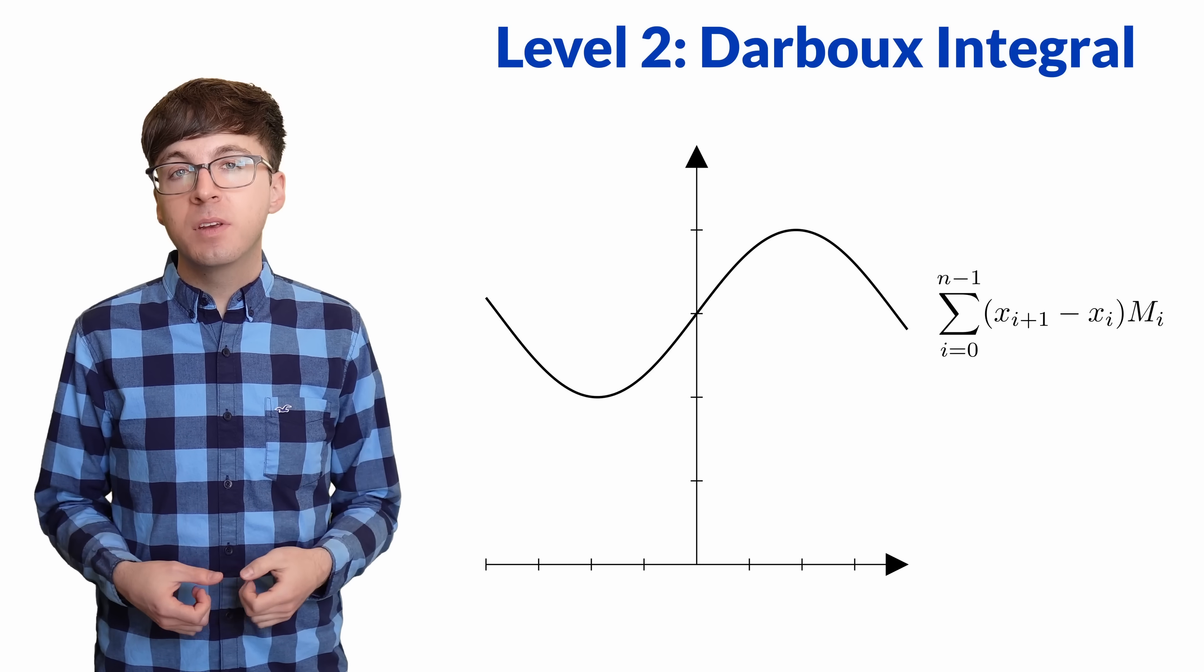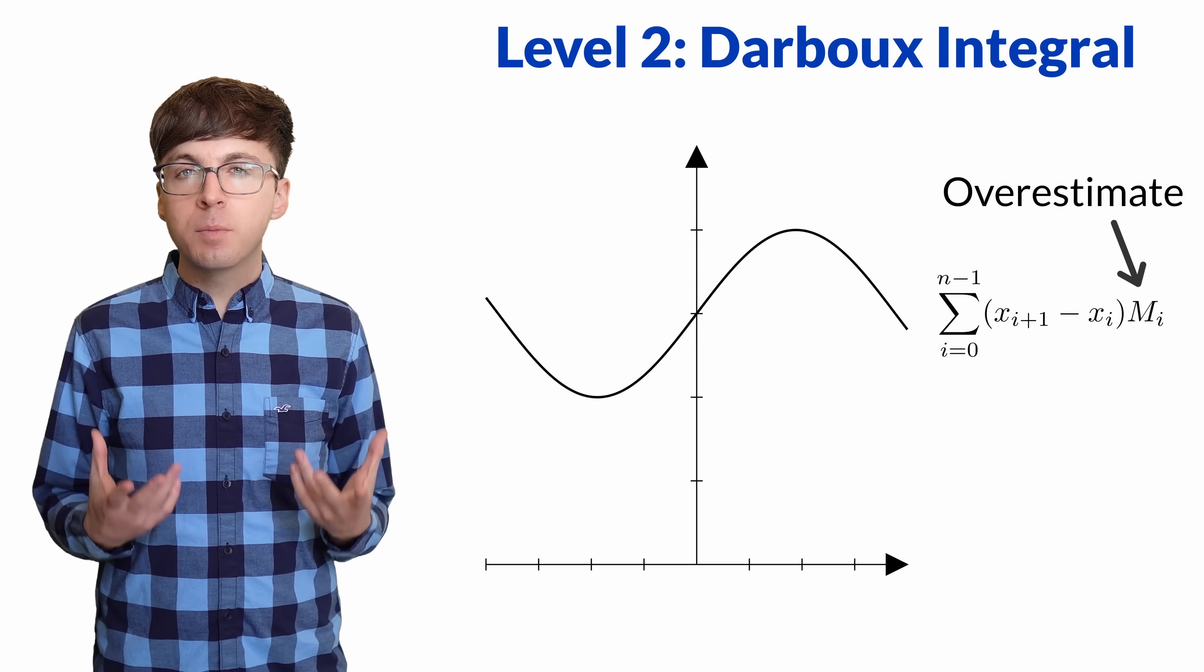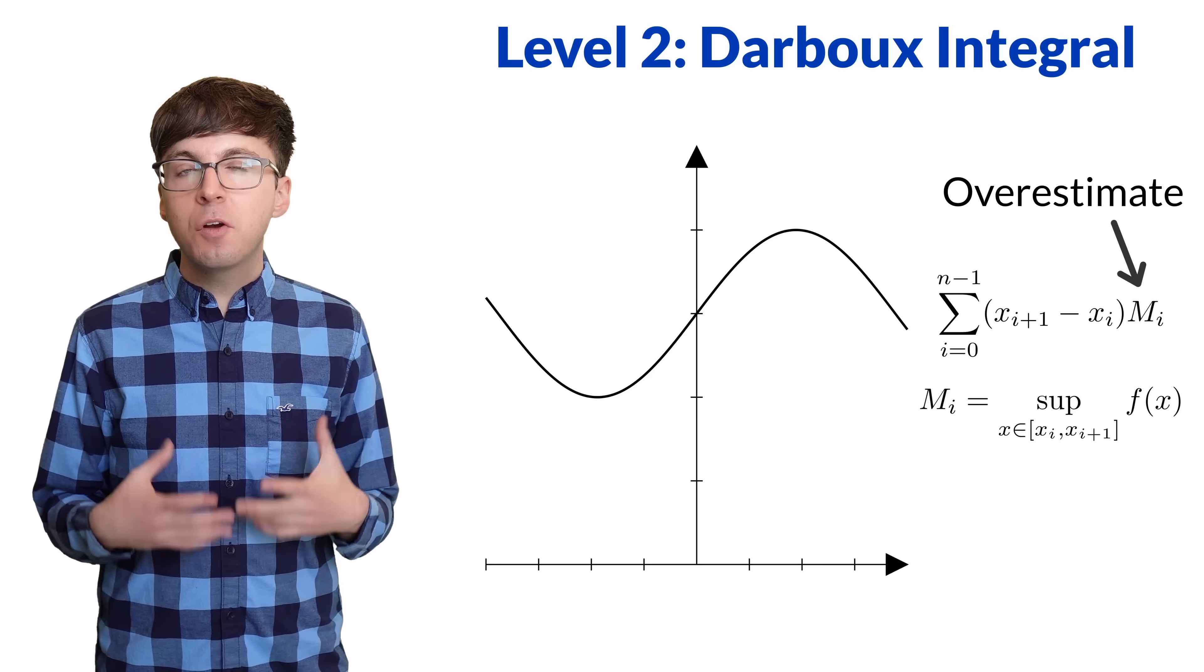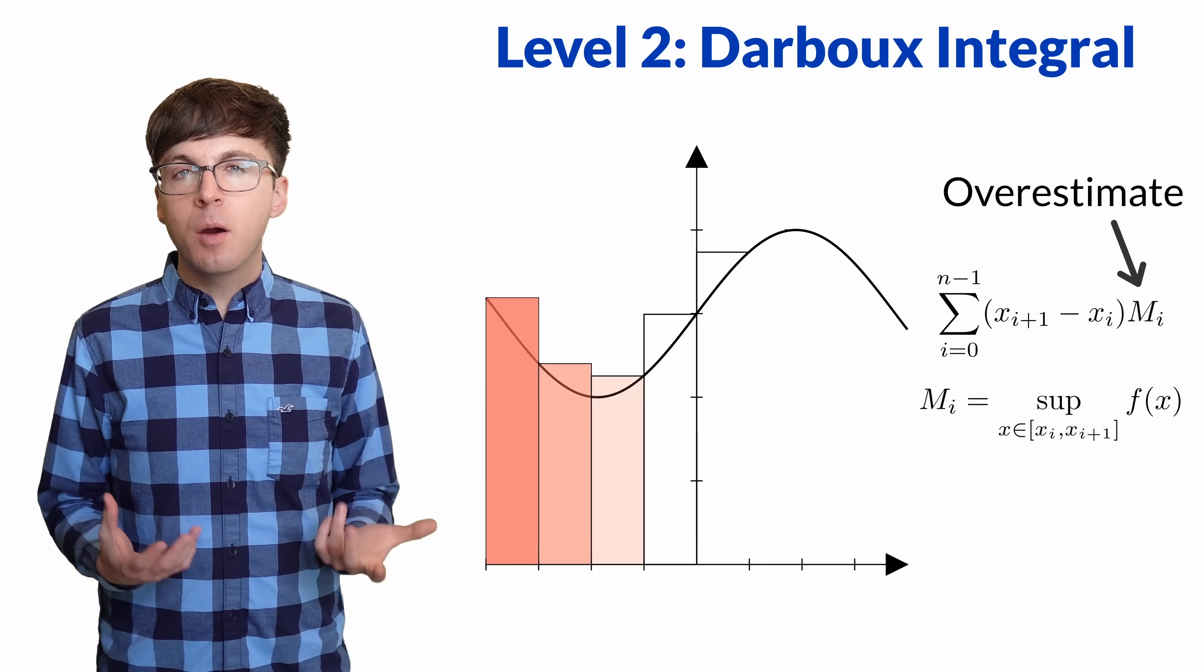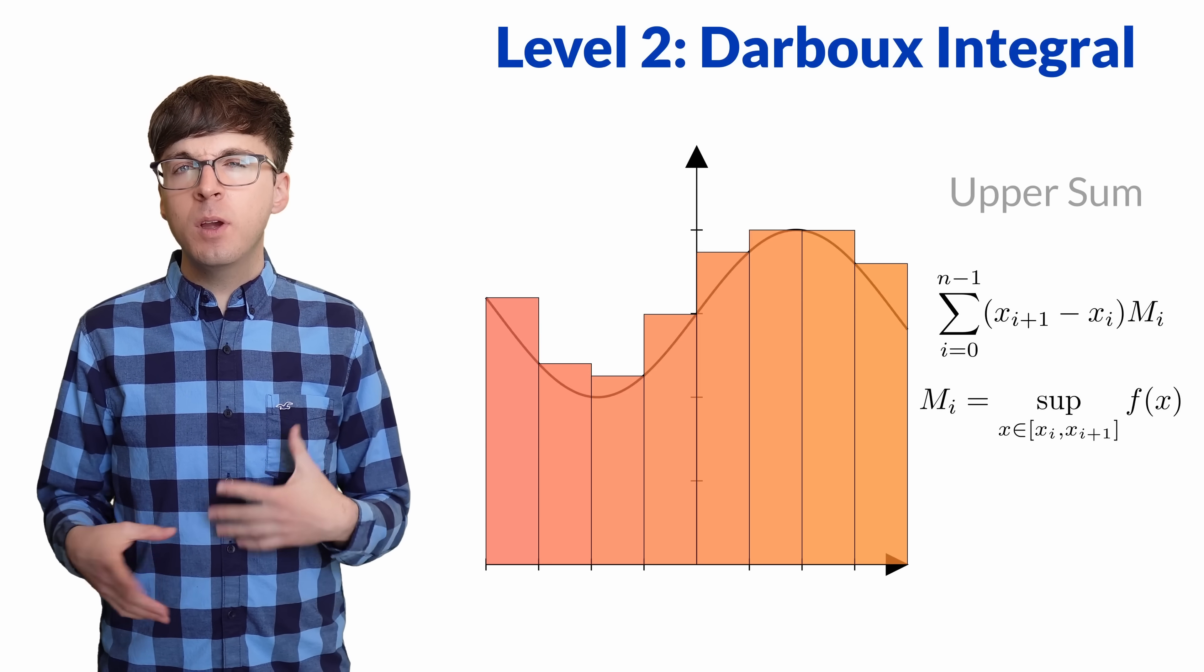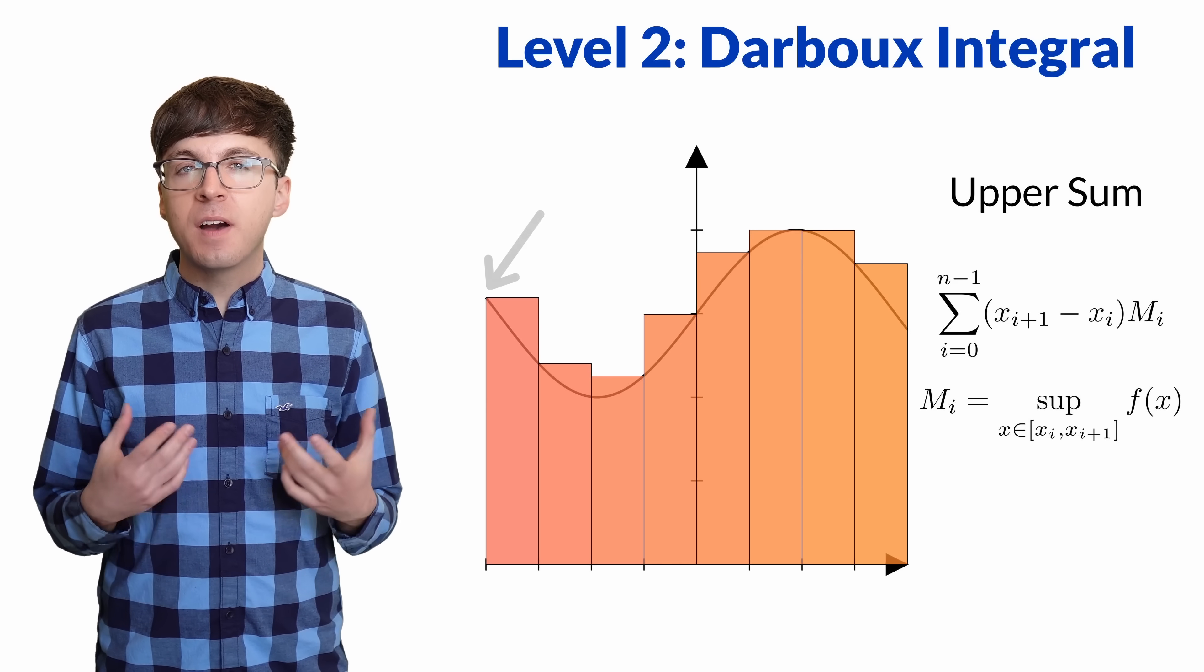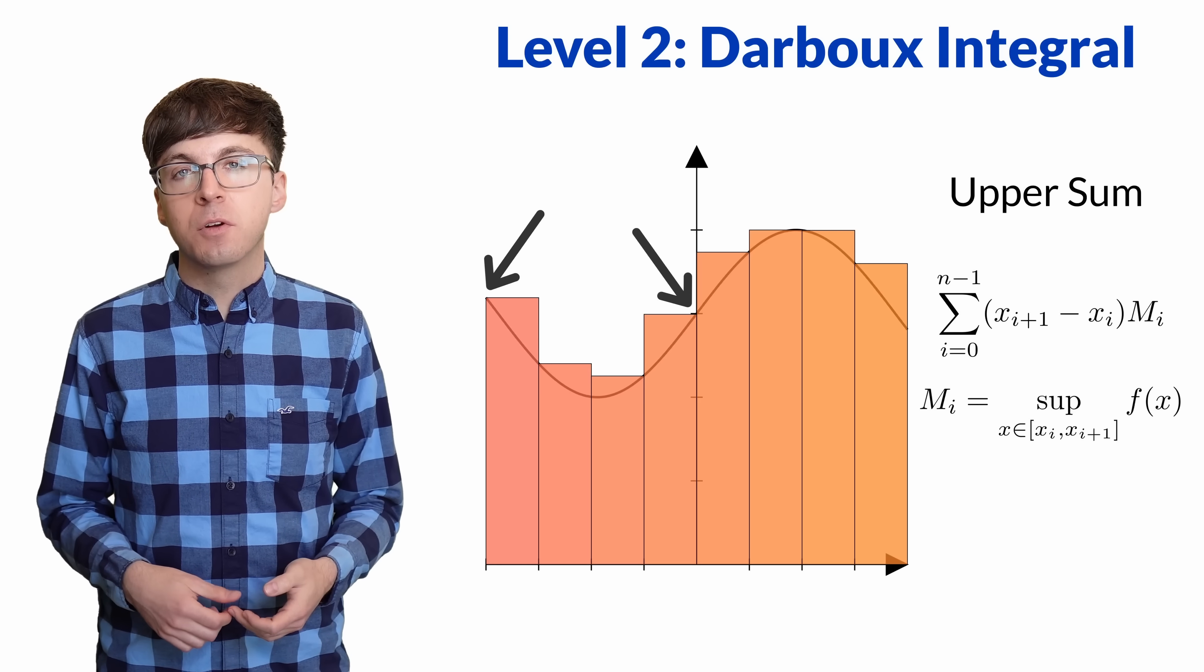The upper Darboux sum gives an overestimate of the area. But let's get the best possible overestimate by making the rectangles as short as possible while still being an overestimate. This is called the supremum of the function on the subinterval. It's an upper bound for the function that's as small as possible. This way we aren't being wasteful in our estimate by having the rectangles be too tall.